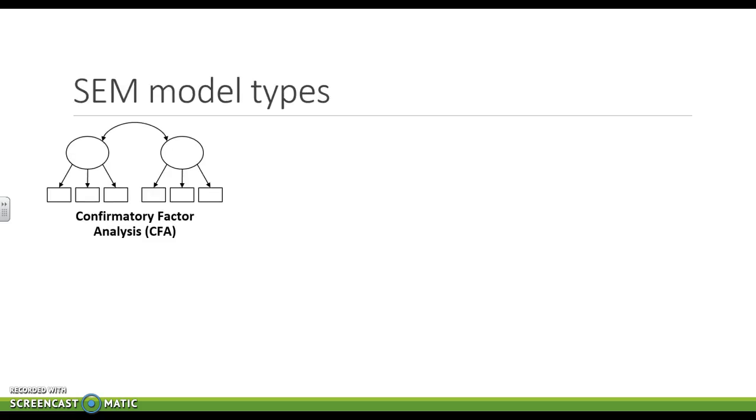So there's three types of models that we're going to be talking about. The first one is confirmatory factor analysis. So here, in this example, we have two latent variables that each have three items or three indicators underneath them.